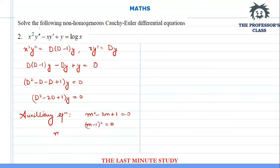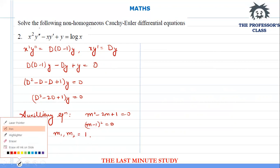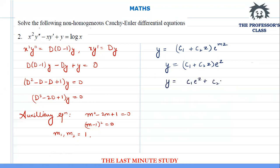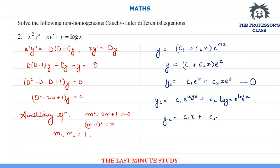From (m minus 1)² equals 0, the values of m1 and m2 are both equal to 1. Substituting the values, y equals (c1 plus c2·z)·e^z, which expands to c1·e^z plus c2·z·e^z. Substituting x equals e^z gives yc equals c1·e^(log x) plus c2·log x·e^(log x), which simplifies to yc equals c1·x plus c2·x·log x.